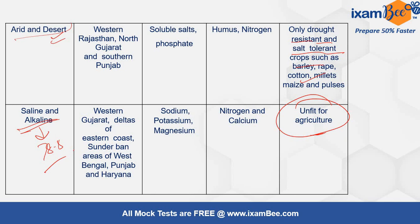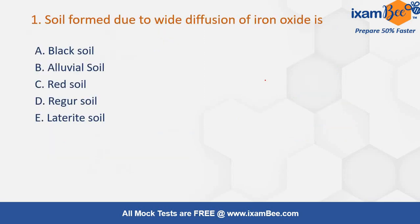Now let's look at some exam questions. The first question: soil formed due to diffusion of iron oxide — is it black soil, alluvial soil, red soil, Regur soil, or laterite soil? The correct answer is red soil.